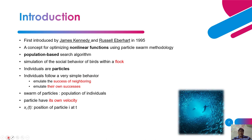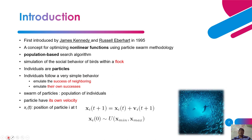Swarm particles are a population of individuals. These particles have their own velocity. The position of a particular particle i at given time t is expressed as X_i(t). The new position is: X_i(t+1) = X_i(t) + V_i(t+1), meaning new position equals current position plus velocity. The initial position X_i(0) is sampled uniformly from the set [X_min, X_max].